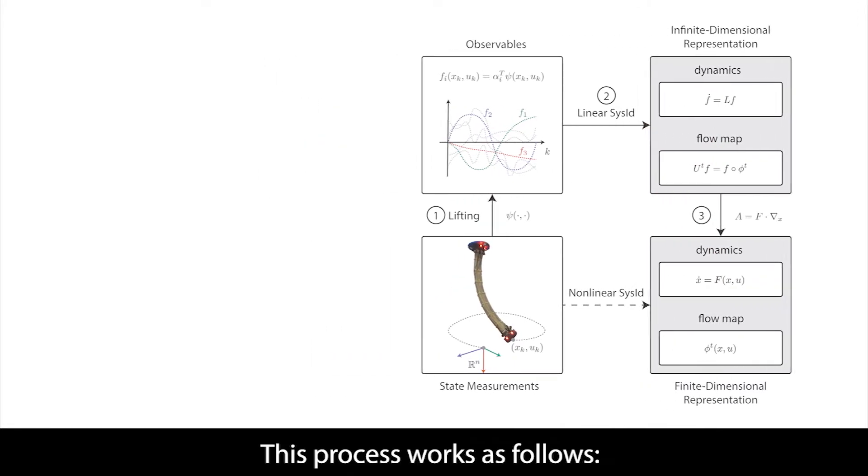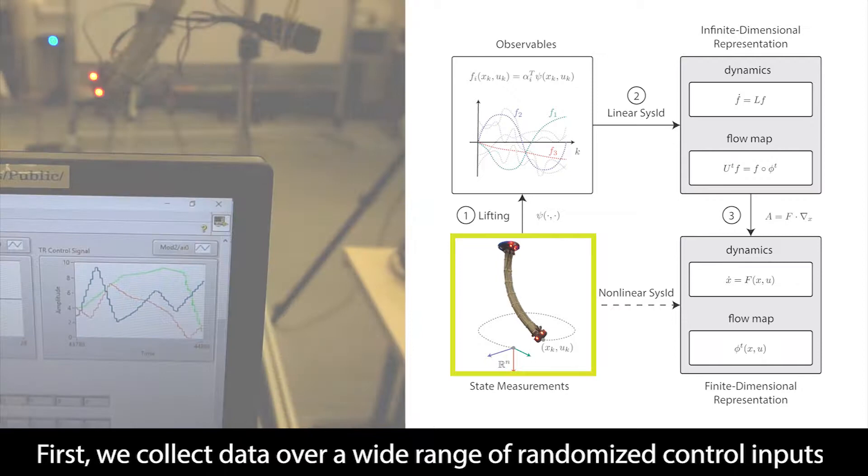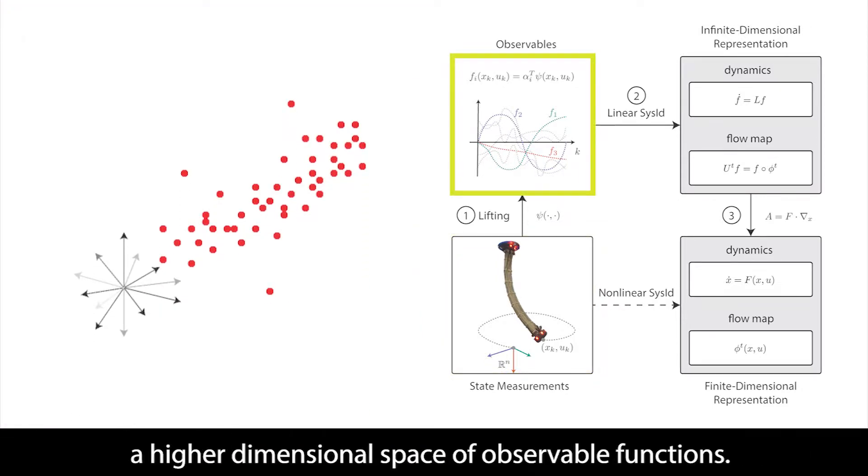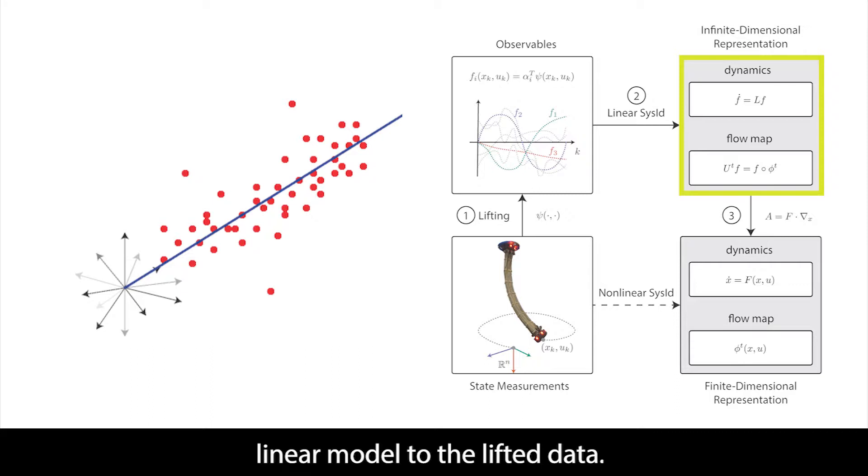This process works as follows. First, we collect data over a wide range of randomized control inputs. Next, we lift the measured data to a higher dimensional space of observable functions. We then perform linear regression to fit a high-dimensional linear model to the lifted data.